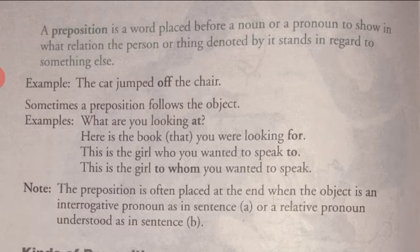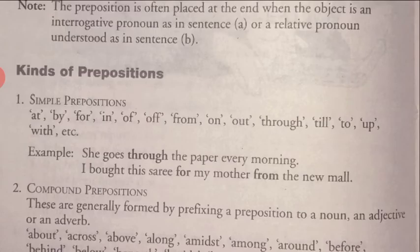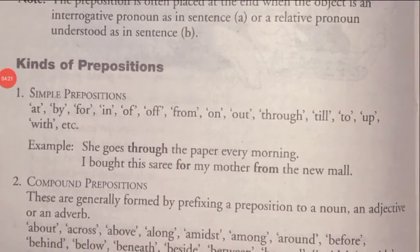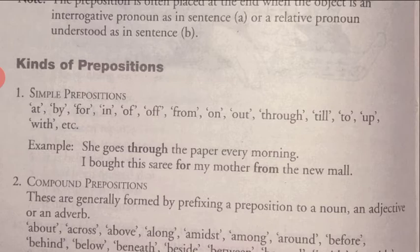Now let us talk about the kinds of prepositions. On this screen, we can study the kinds of prepositions. The very first is simple prepositions. Words like at, by, for, in, of, from, on, out, through, till, to, up, with, etc. There are so many words that work as prepositions in a sentence, but these are the most commonly known ones given in the list.